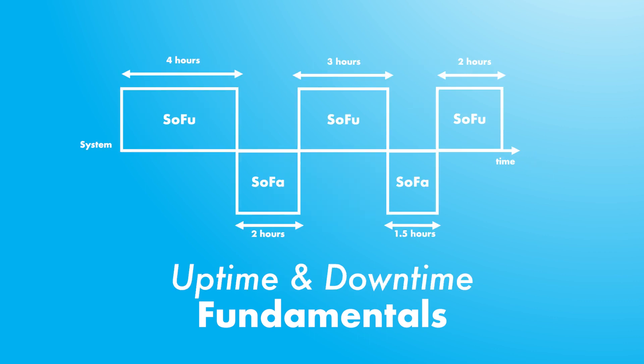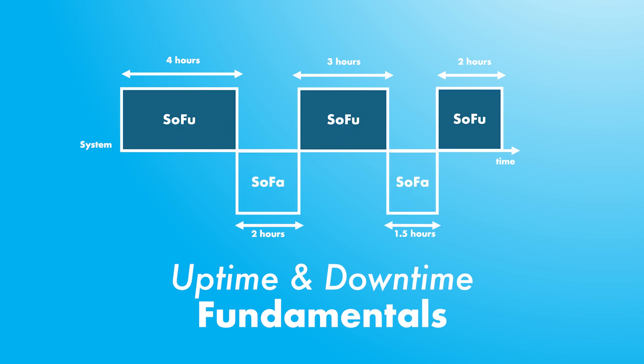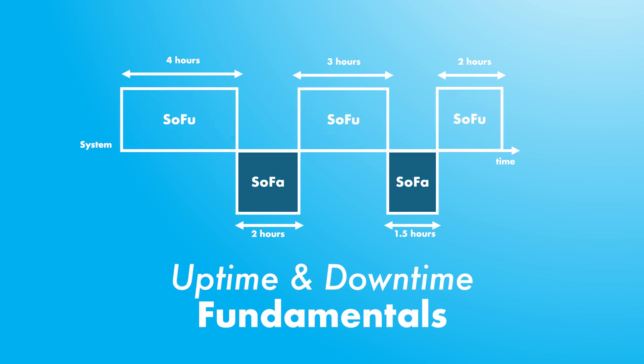We complete this section with the concepts of uptime and downtime. Uptime is the time during which a system, such as an aircraft, is functioning or is able to function. Downtime is the opposite — the period during which the system is unavailable to perform its desired function, meaning it is in a state of failure. To calculate uptime, we add the times in which the system is in a state of functioning; to calculate downtime, we add the times in which the system is in a state of failure.